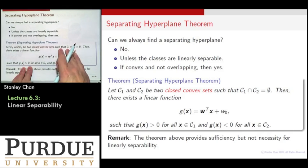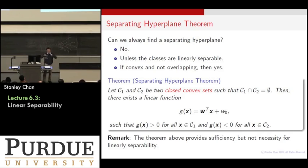That is called the separating hyperplane theorem. It says that under this condition, you can find a plane that really separates them into two classes, one on the positive side, one on the negative side.